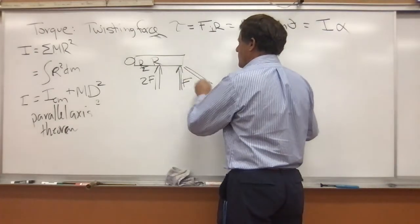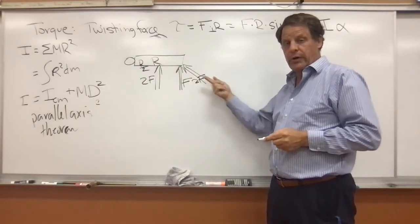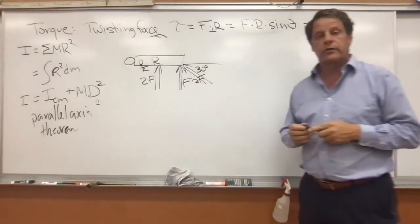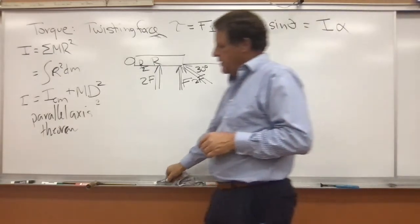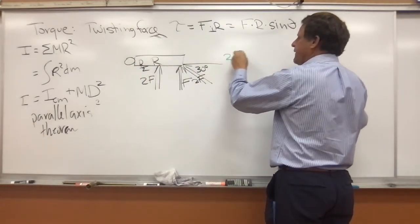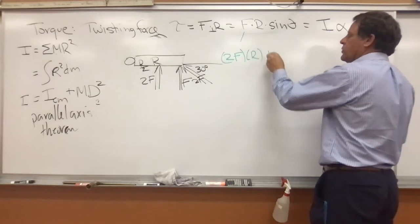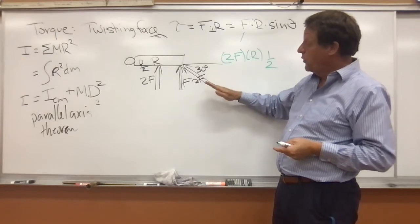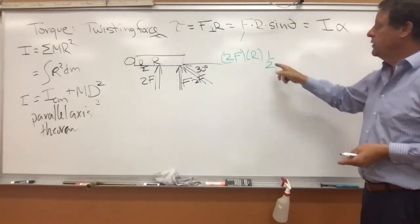If we had 2F but we were not pushing perpendicularly — say at an angle of 30 degrees — then torque equals F times R times sine theta. With 2F times R times sine 30 degrees, which is one half, that gives the same torque as force F pushing perpendicularly on the end, because sine of 30 degrees is one half.